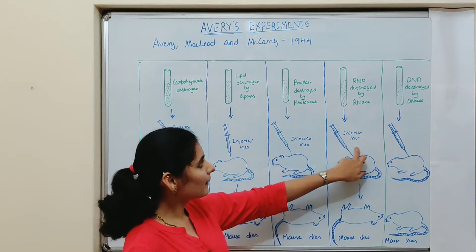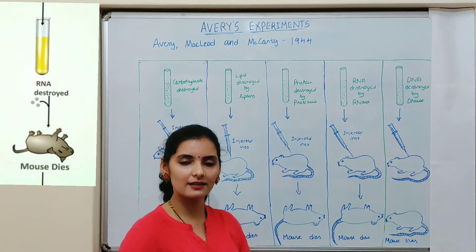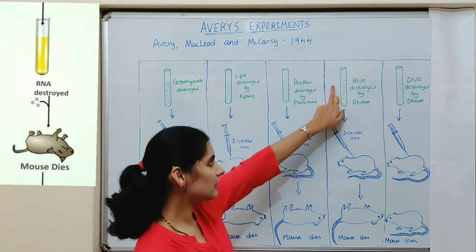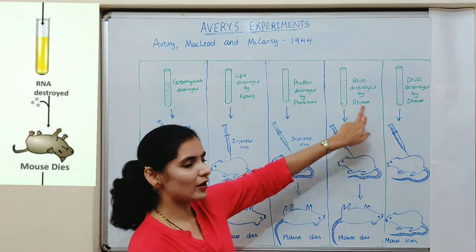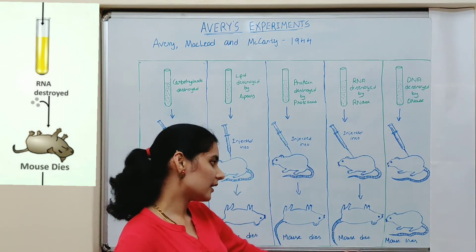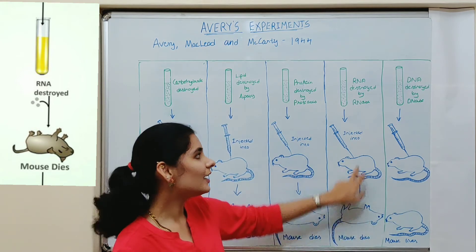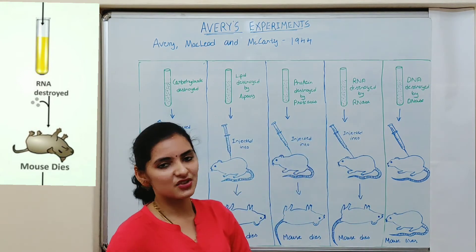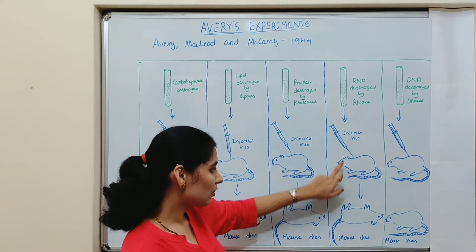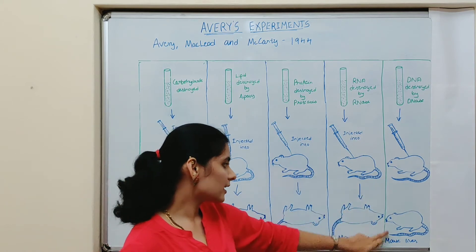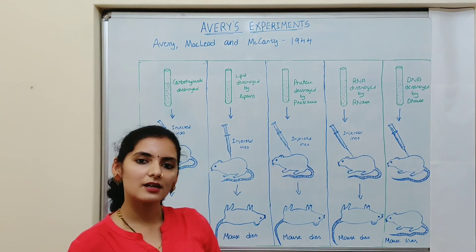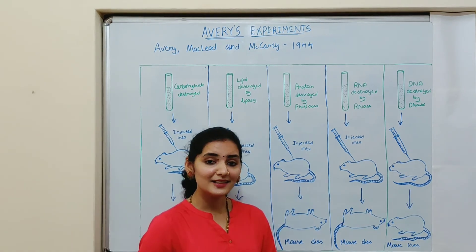In the next experiment, RNases — enzymes that digest RNA — were used. All RNA present in the extract was destroyed by RNases, and the same procedure was carried out. Again the mouse died of pneumonia, suggesting that RNA is not the transforming principle, because transformation occurred even in the absence of RNA.